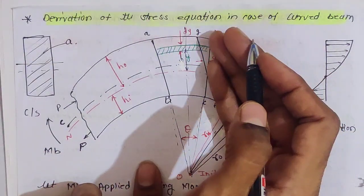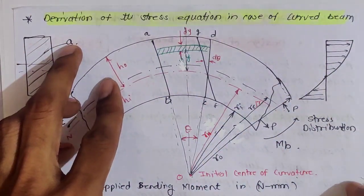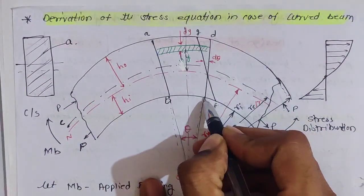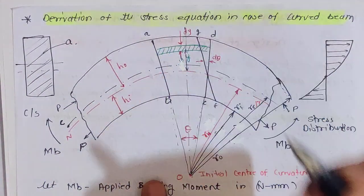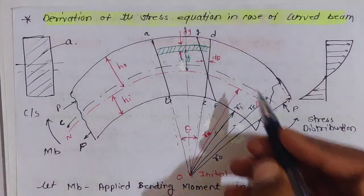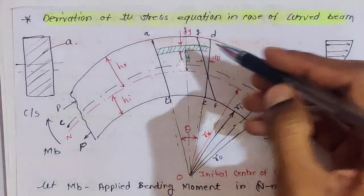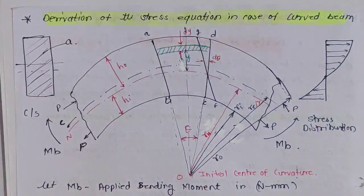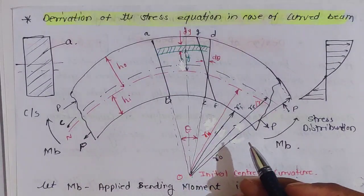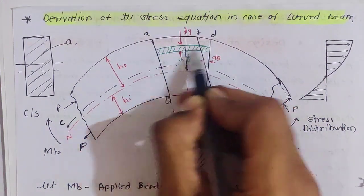After applying the bending moment, analyzing the DC fiber: C will try to move one side and D will try to move the other side. After applying the bending moment, C moves to F and D moves to G. So we can say that after applying the bending moment, the fiber CD rotates and makes an angle dθ, taking new positions F and G.